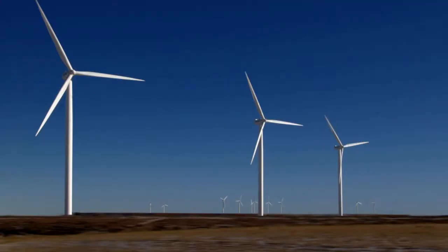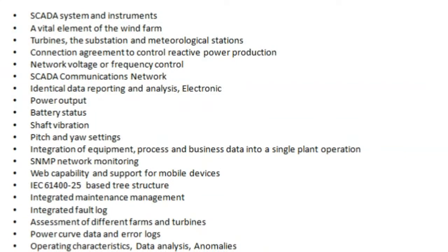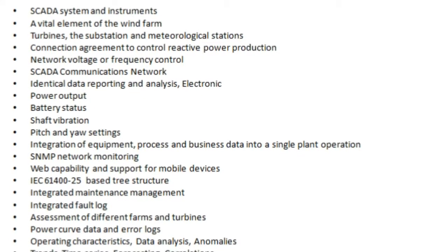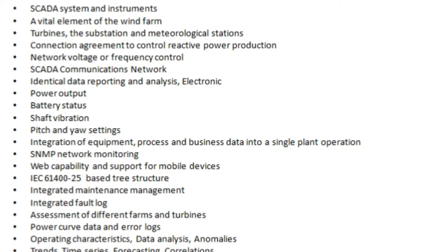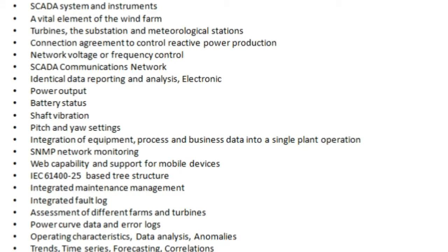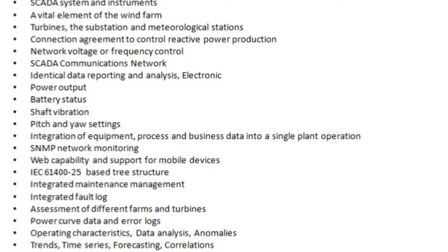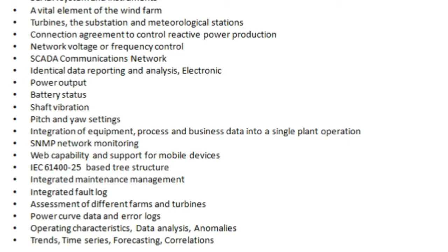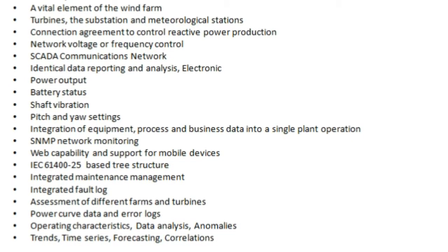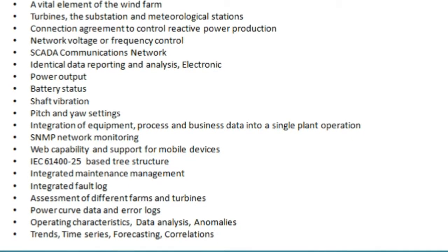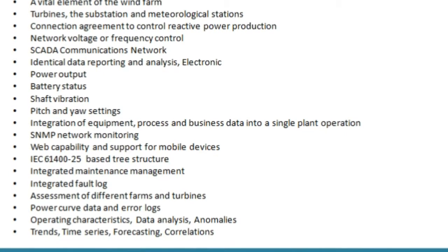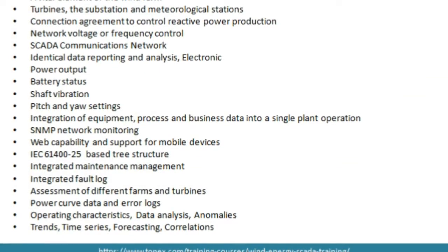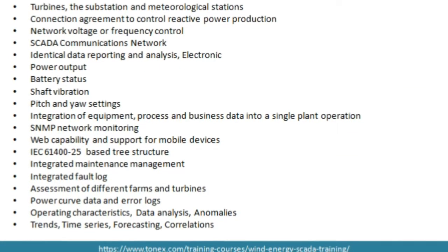SCADA communications network topics include identical data reporting and analysis, electronic power output, battery status, shaft vibration, pitch and yaw settings, integration of equipment, process and business data into a single plant operation, SNMP network monitoring, web capability and support from mobile devices, IEC 61425-based tree structure, integrated maintenance management, integrated fault log, assessment of different farms and turbines, power curve data, and error logs, operating characteristics, data analysis, anomalies, trends, time series, and forecasting.